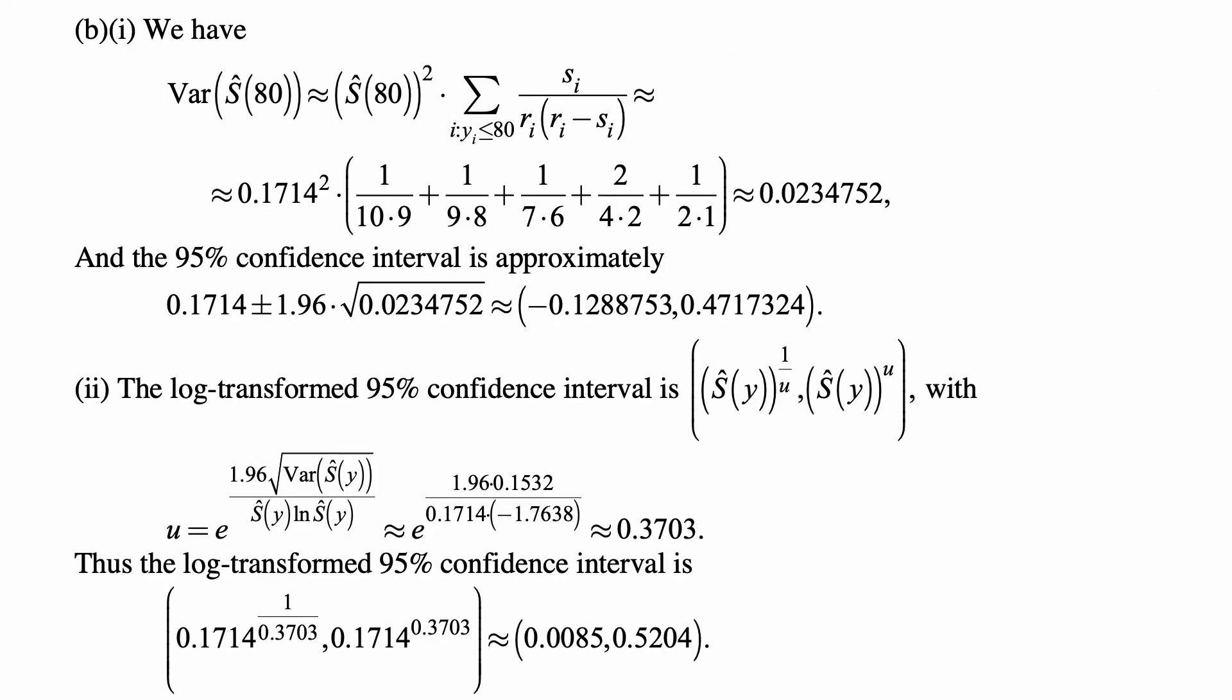For part B, the variance of S-hat(80) is approximately S-hat(80) squared times the sum of s_i over r_i times (r_i - s_i) for i such that y_i ≤ 80. And we plug in those values from the table that we had there, and that's approximately 0.0234752.